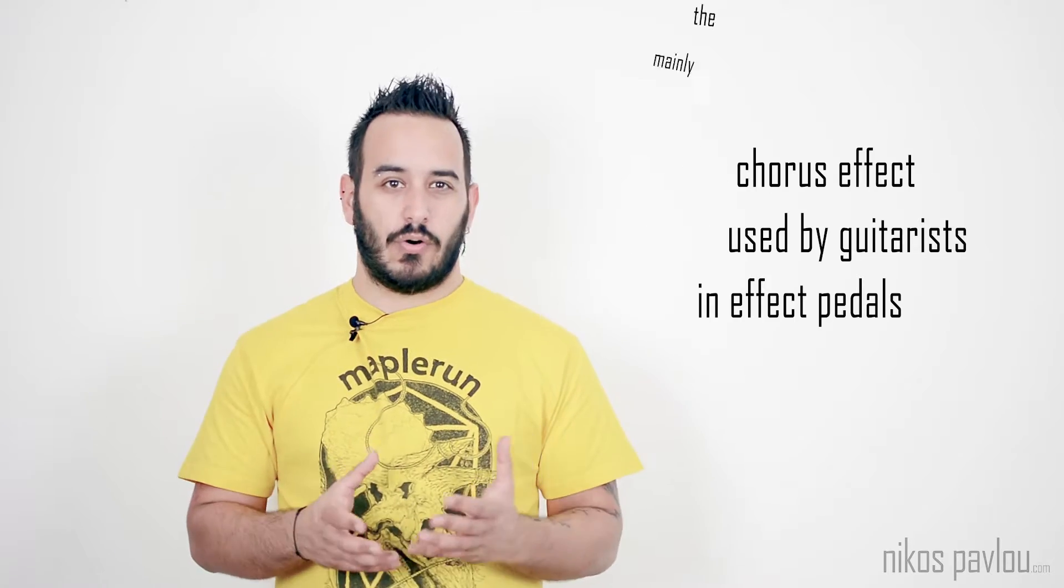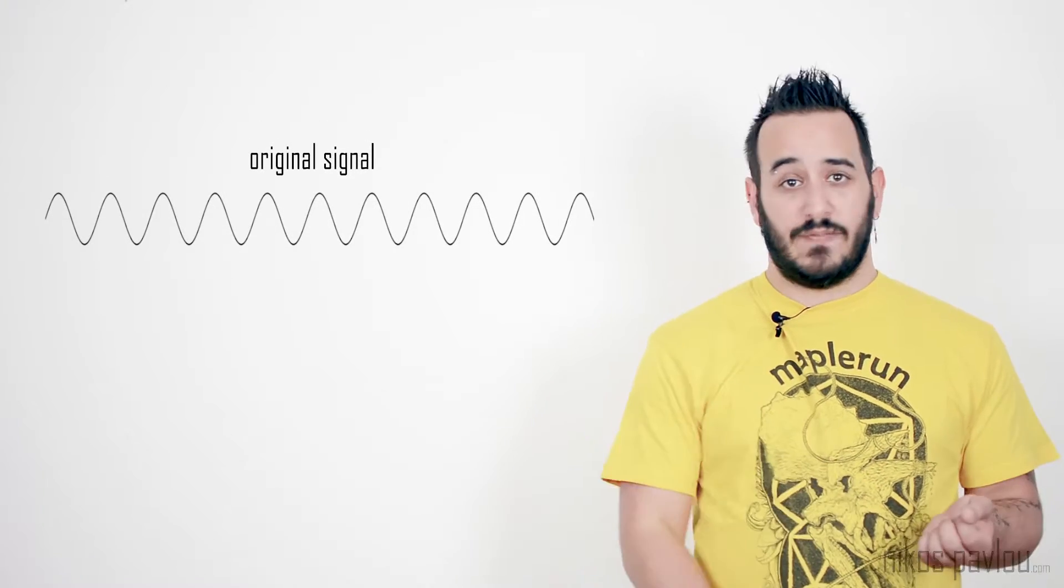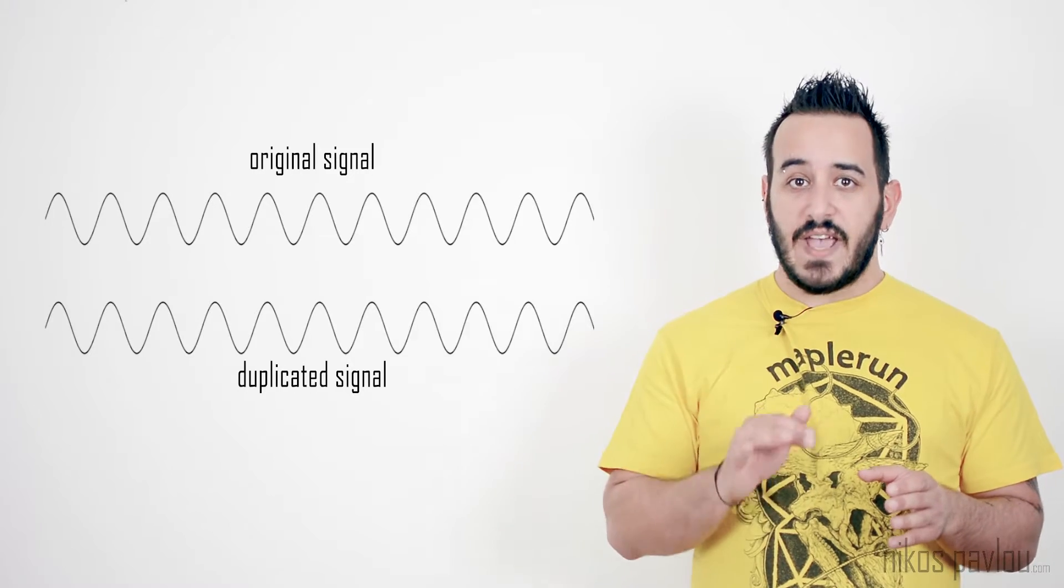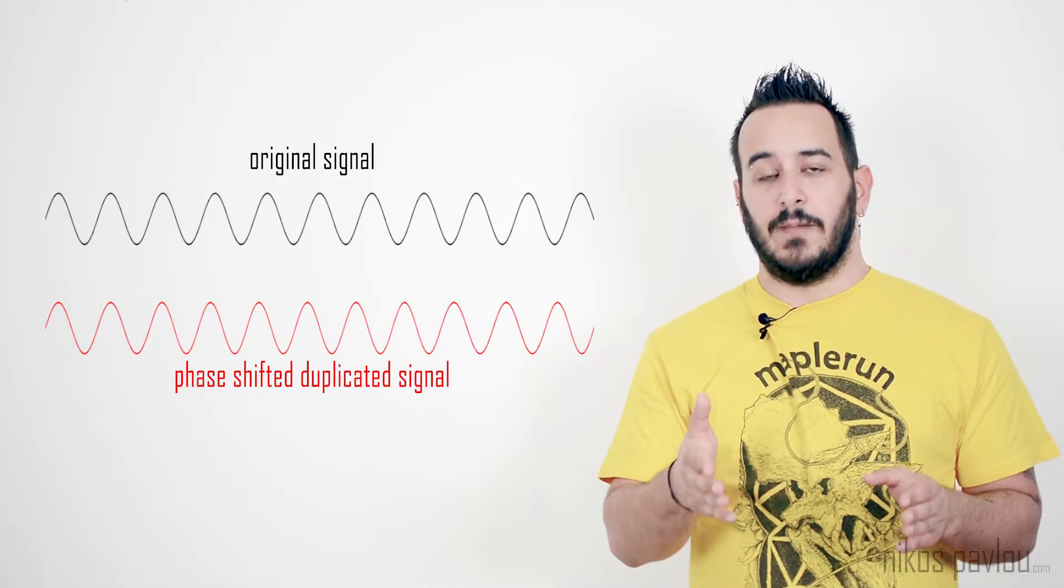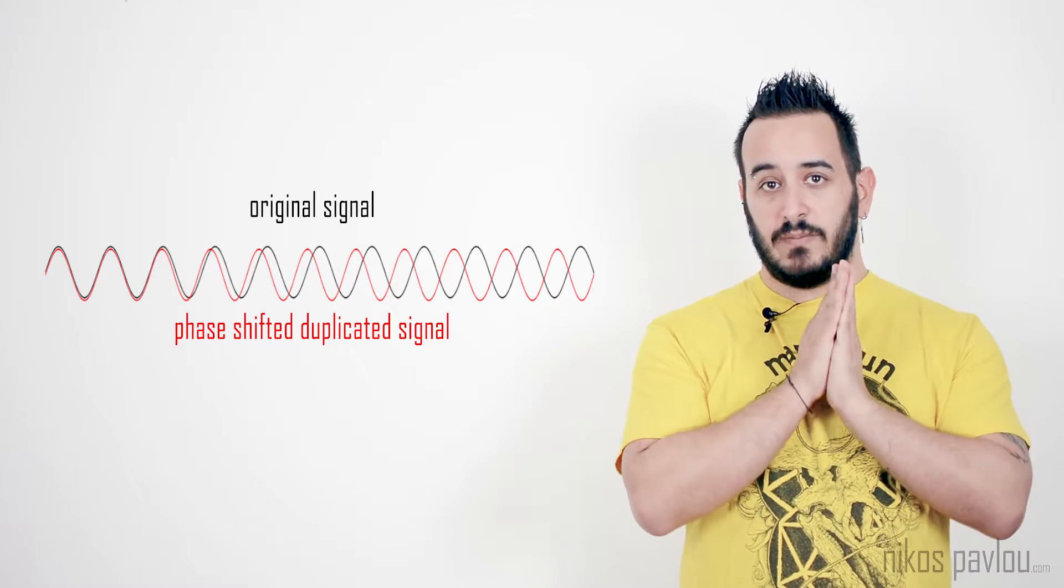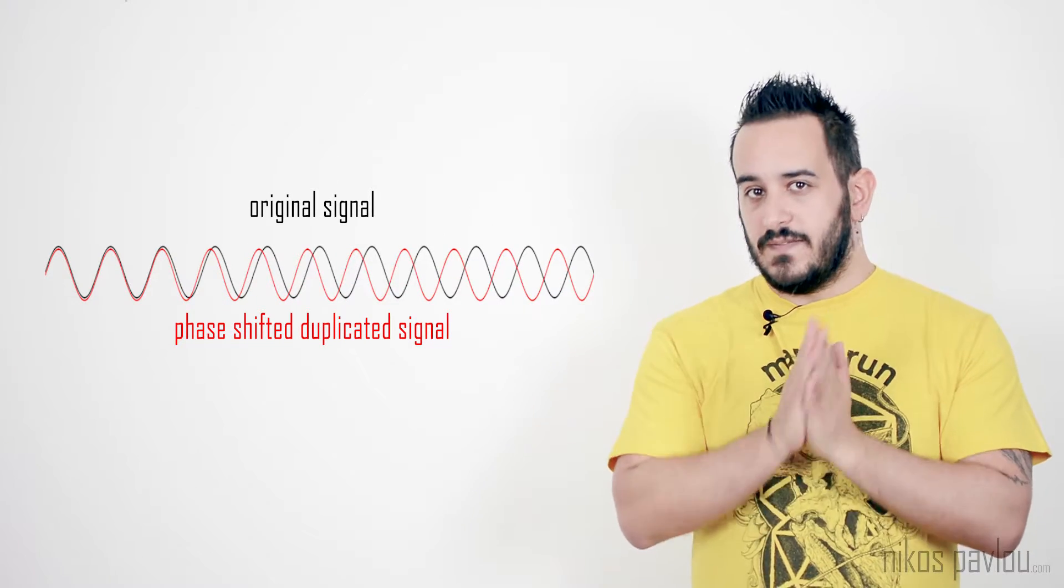How does chorus work? It's very simple. A chorus pedal will actually take the original signal, let's say a chord that's played by a guitarist, and it will duplicate it. Then, it will change the phase of the duplicated signal. Then lastly, it will sum them up together and deliver them to the output.